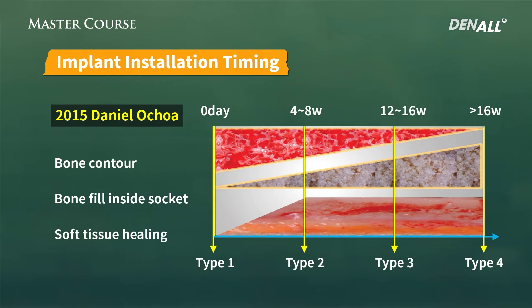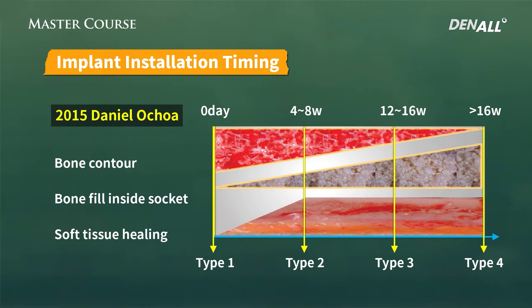I've talked about the implant placement period. In terms of healing, the contour of the bone with time becomes narrower. Inside the socket, bone fill is made with time. Soft tissue, up until a certain point, continues to heal, and at two months, soft tissue healing is complete and the form continues to be maintained. You need to understand the healing very well, and it will be very useful in placing your implant.